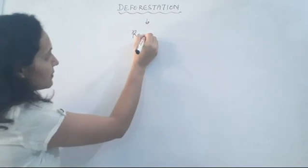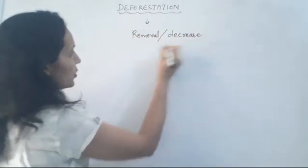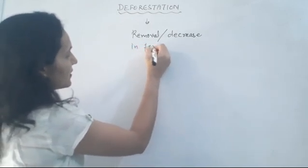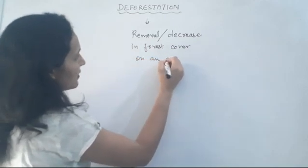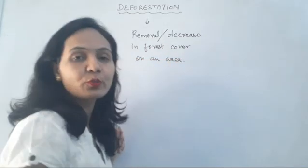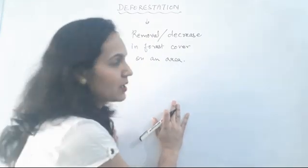Students, hope you all are fine. Today the topic we're going to discuss is deforestation. In the previous class we discussed about ozone depletion. So let's start with our topic — deforestation means the removal or decrease in the forest cover on an area. Cutting trees is said to be deforestation.